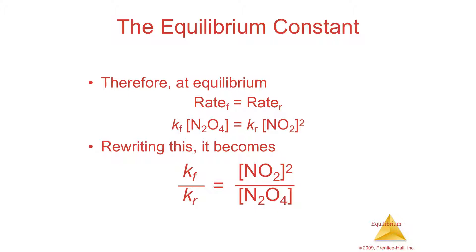We know that at equilibrium, these rates are the same — that's what equilibrium means. If you have an equilibrium situation, the rate of the forward reaction is going to be equal to the rate of the reaction backwards. And since the two rates are equal, you can set them equal: the forward rate constant times the concentration of the reactants equals the reverse rate constant times the concentration of the product squared.